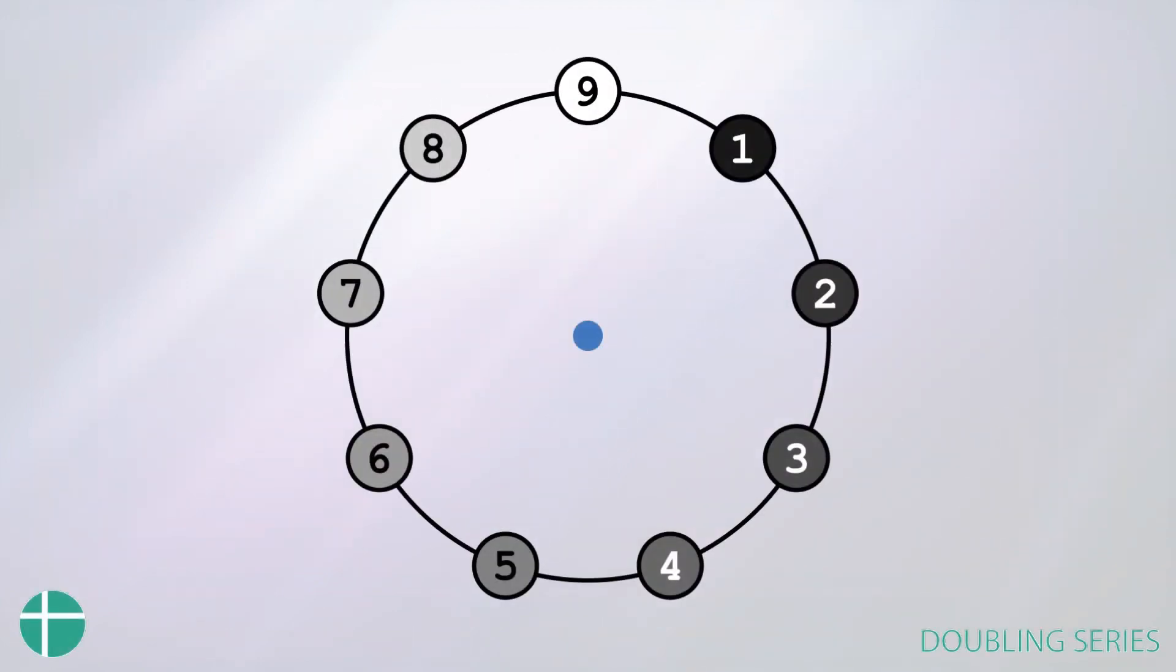So one way of representing this series is by graphing it. And we can do so by using a circular graph. If we draw a circle and we divide it into nine, and we put a decimal at each of these divisions, we can then graph out the series on the circle. This is what the doubling series looks like. It's like a winged V pattern.